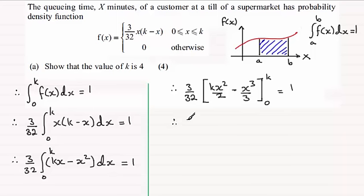So substituting for k, x as k first of all, we're going to have the 3 over 32, and then you're going to get k times k squared, so that's going to be k cubed over 2, and then you've got k cubed over 3. And if you substitute 0 in, you're just going to get 0 across those terms. So we've got this, and that's going to be equal to 1.